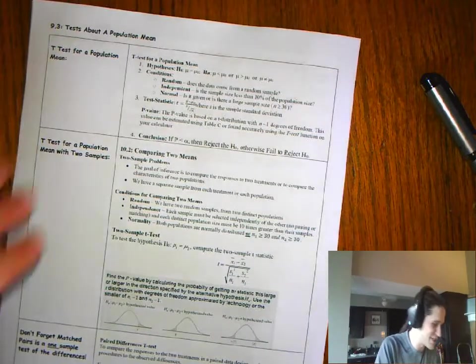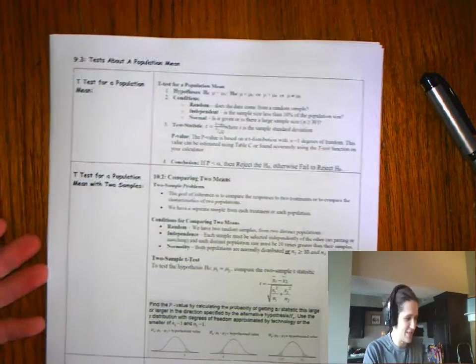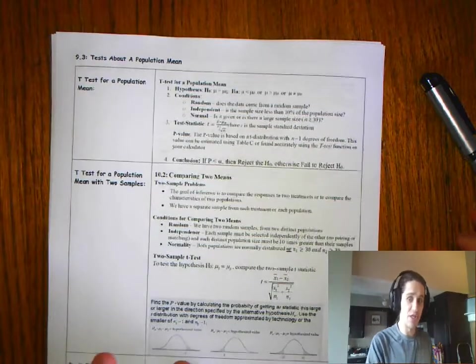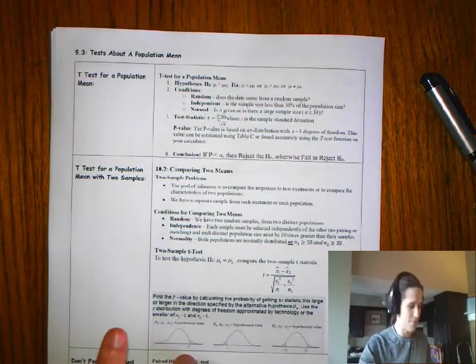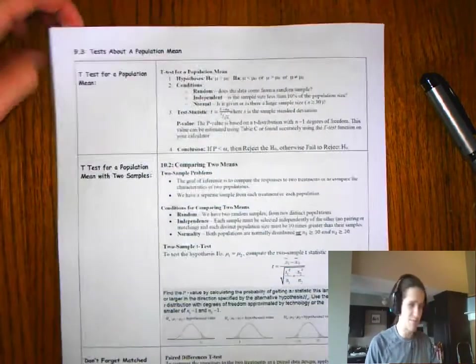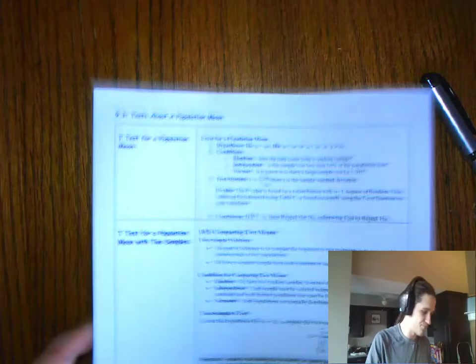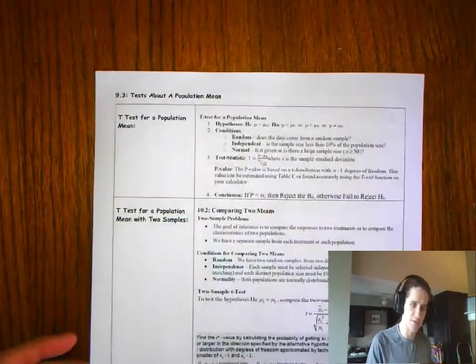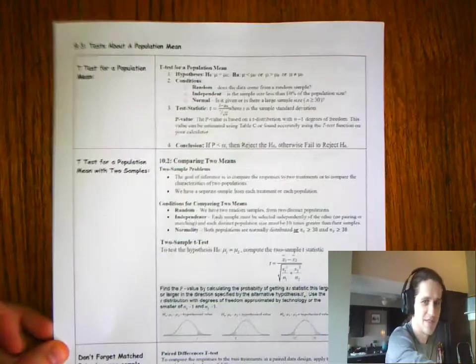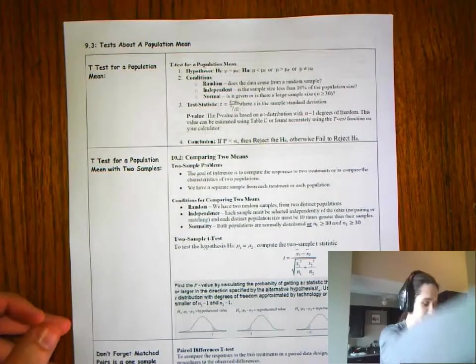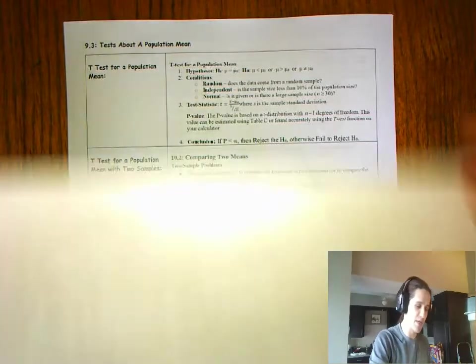Good morning, children. I know you've missed me. We're entering into 9.3. I can't see my head as much. There we go. Entering into 9.3 tests about a population mean. Think about everything we've done so far. I'm going to sketch this out. We're going to do this probably on Friday. We'll actually be through all the content on Friday.